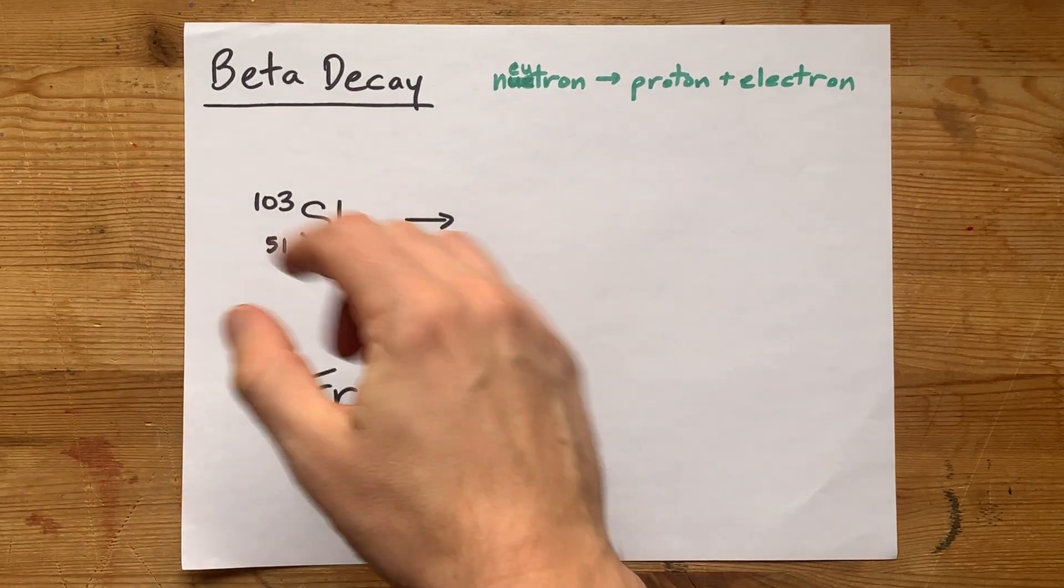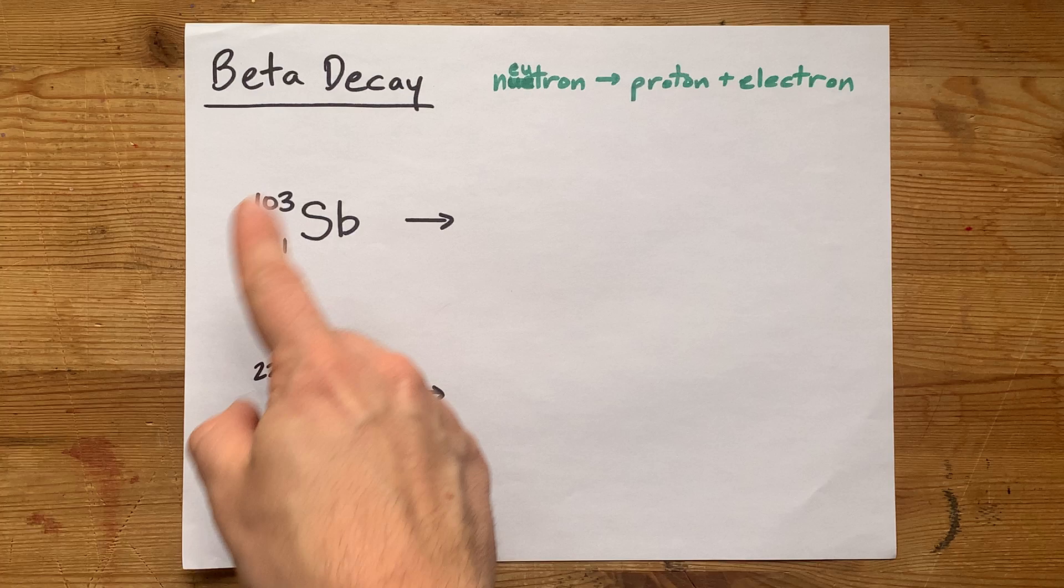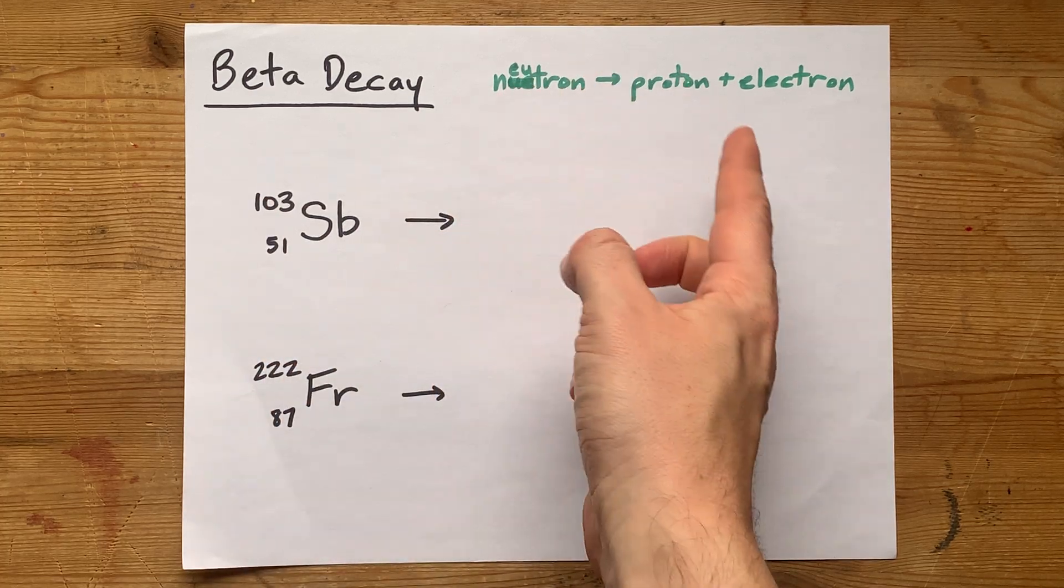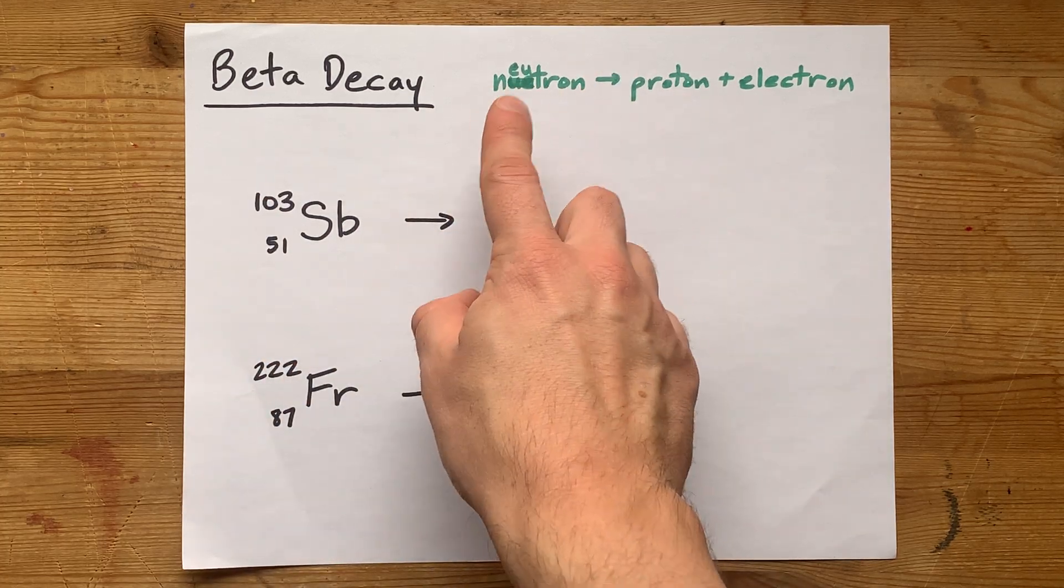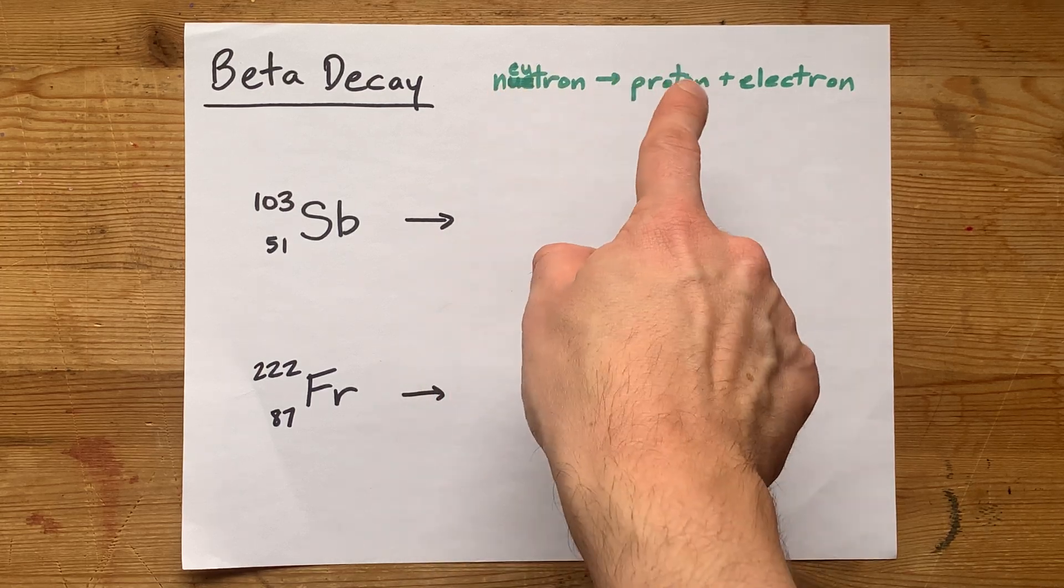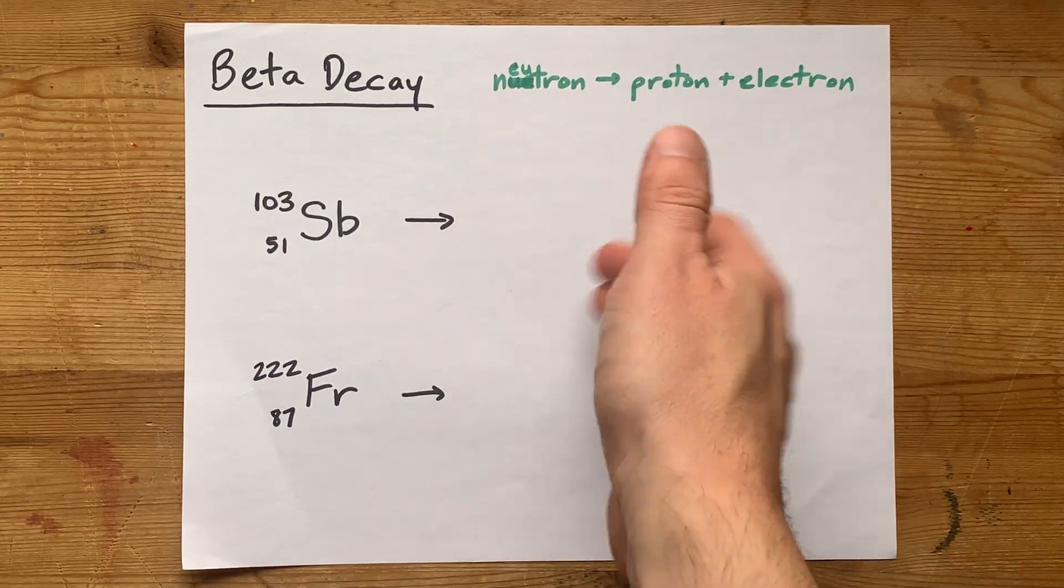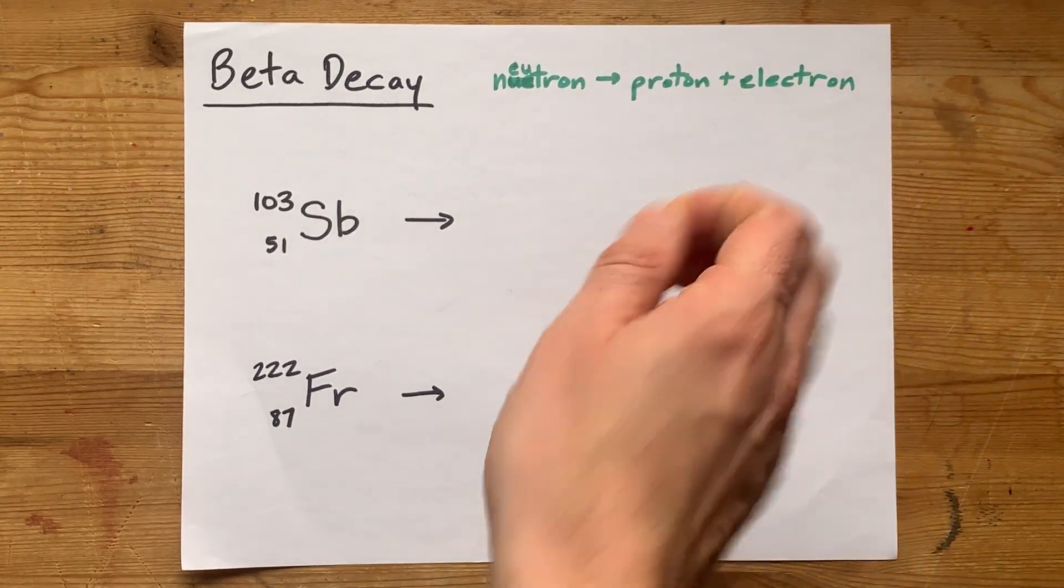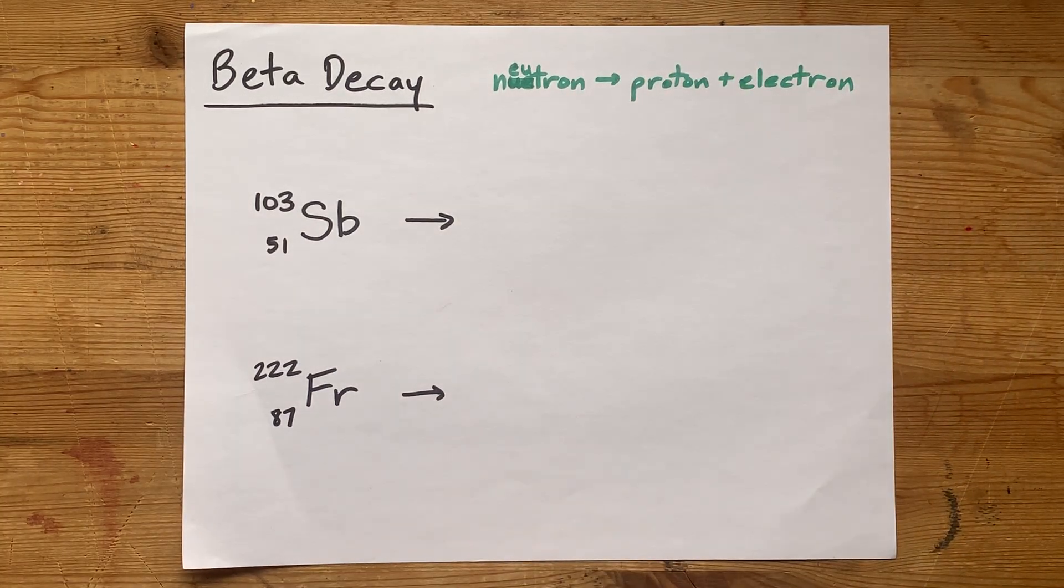Beta decay is when a neutron in a radioactive isotope breaks apart. It ends up giving you a proton, which have about the same mass, and also an electron, which has relatively negligible mass, but don't tell your physicist friends that.